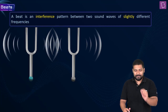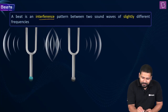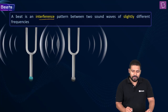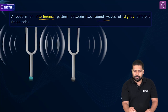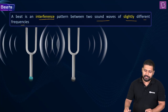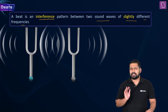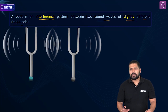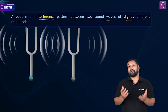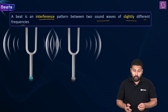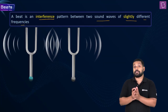What is a beat? A beat is an interference pattern between two sound waves of slightly different frequencies. It is nothing but an interference between two waves of slightly different frequencies.